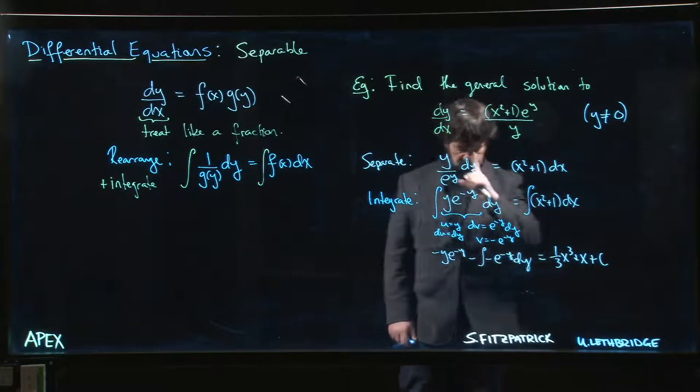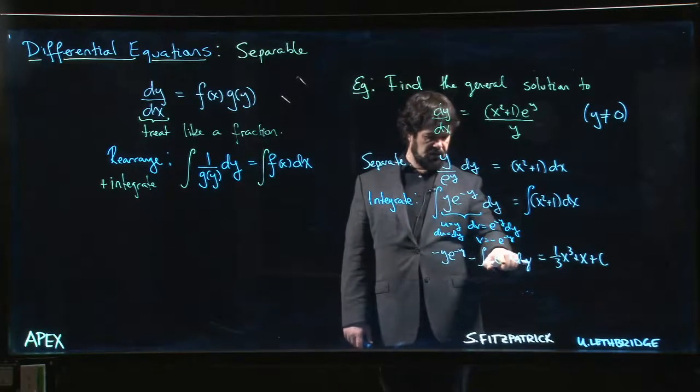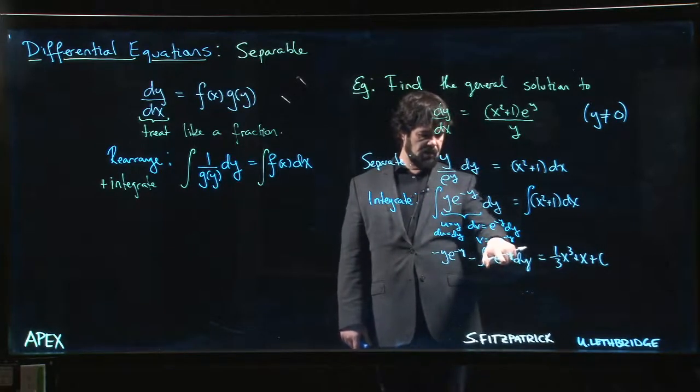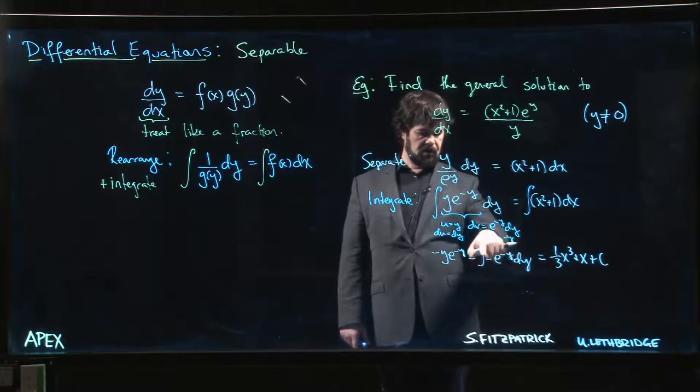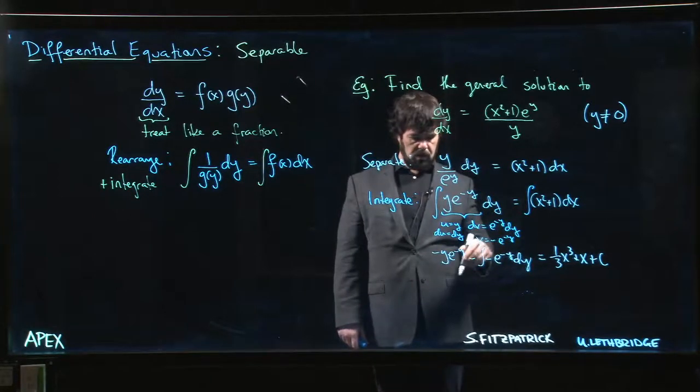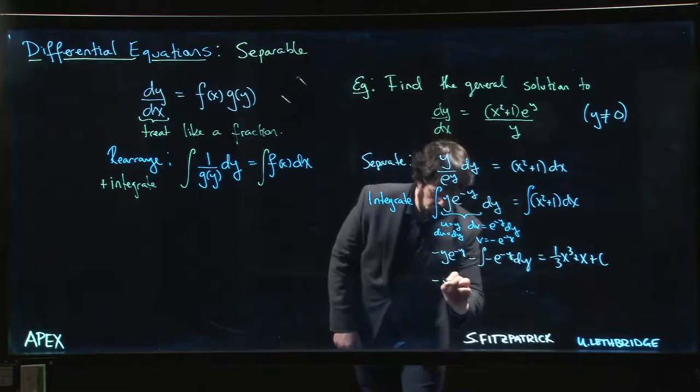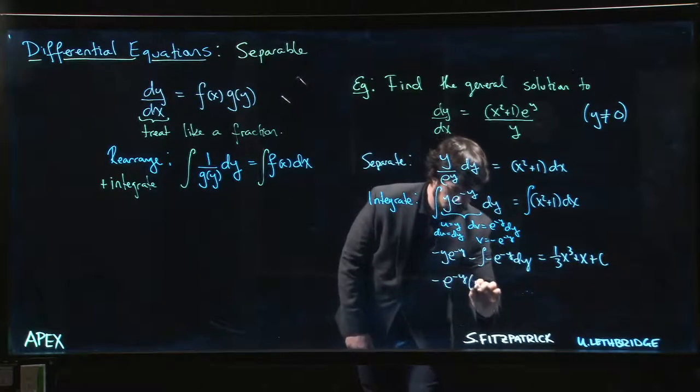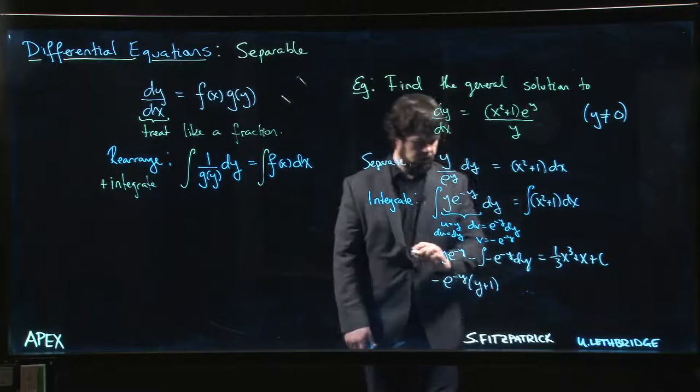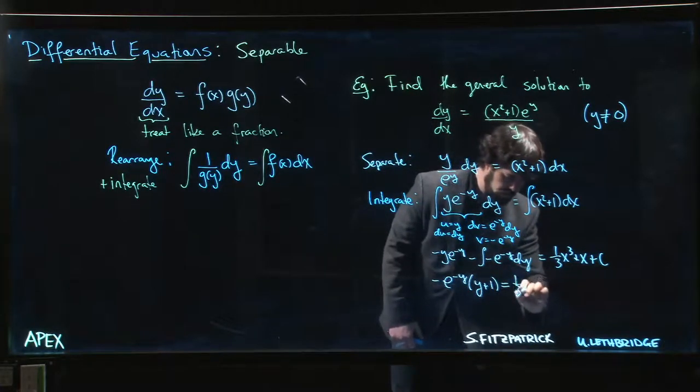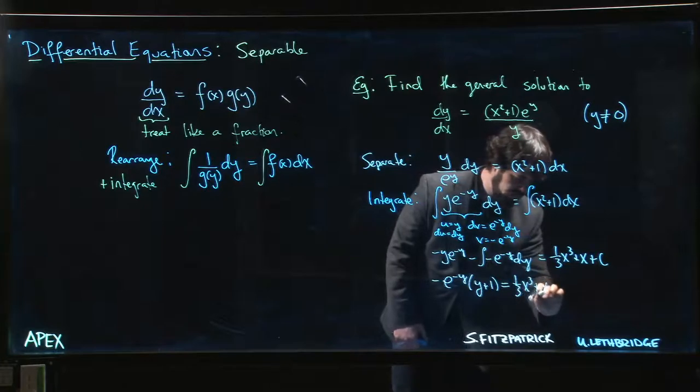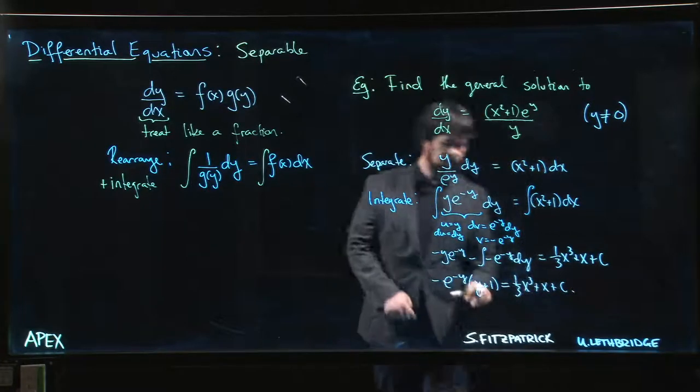One more step here. We integrate this, which is going to give us—there's going to be three minus signs overall—I'm going to get minus e to the minus y times (y plus 1) equals one third x cubed plus x plus c.